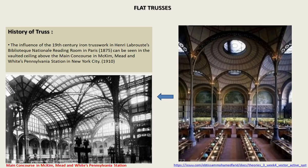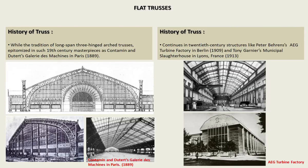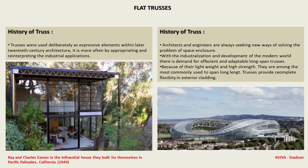The influence of 19th century iron structures can be seen in Henri's Bibliothèque Nationale Reading Room in Paris, as well as the vaulted ceiling above the main concourse in Grand Central Station in New York City. The tradition of long-span arched trusses is optimized in 19th century masterpieces such as Contamin and Dutert's Galerie des Machines in Paris, and continues in 20th century structures like Peter Behrens' AEG Turbine Factory in Berlin and Tony Garnier's Municipal Slaughterhouse in Lyons, France, where trusses were used deliberately as expressive elements.